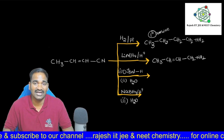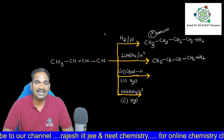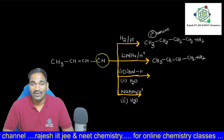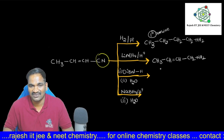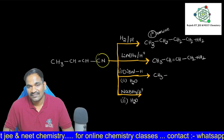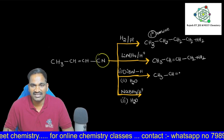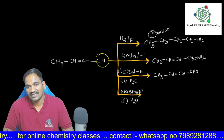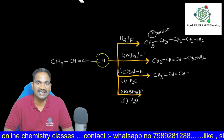Now coming to the next one: diborane (BH₃) followed by hydrolysis. You know diborane can convert this cyanide to an aldehyde. Main products only we have to discuss — byproducts I am not writing. So therefore, you see CH₃-CH= double bond is not reduced here. The cyanide will be converted to an aldehyde, giving CHO.